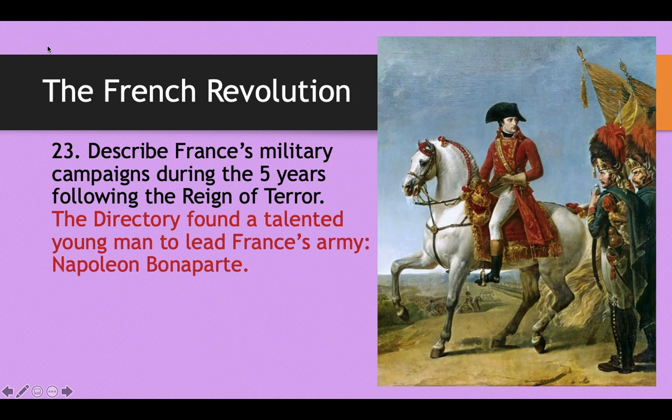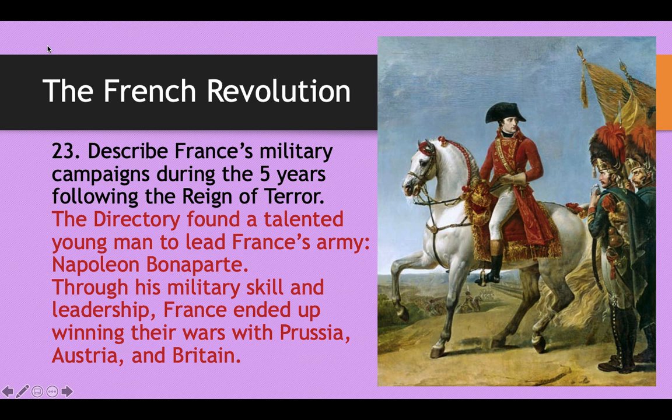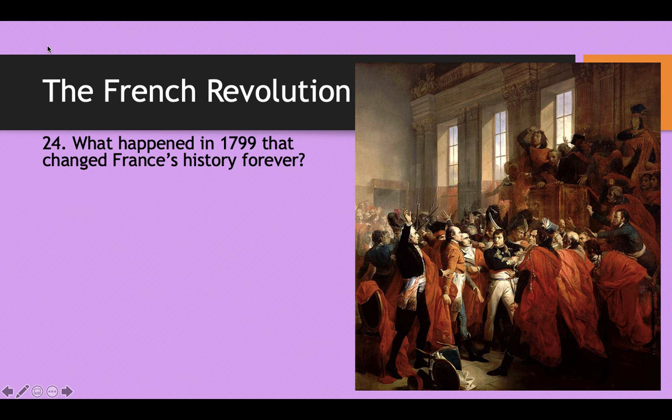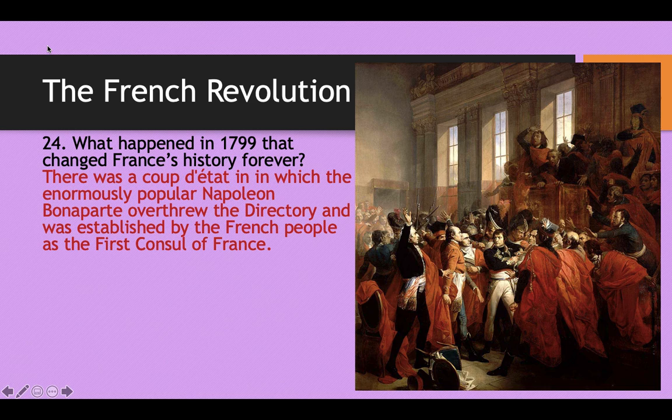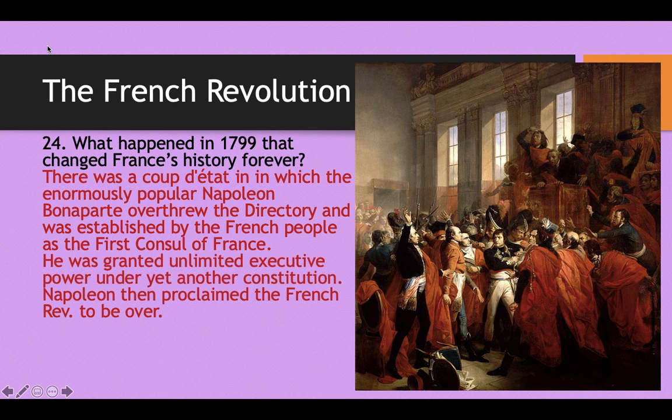The Directory found a very talented young man to lead France's army: Napoleon Bonaparte. Through his military skill and leadership, France ended up winning their wars with Prussia, Austria, and Britain, restoring order to France. Napoleon understandably became wildly popular with the French people. So much so that by 1799 there was a coup d'état — a takeover in which the enormously popular Napoleon Bonaparte overthrew the Directory, the people who had actually appointed him, and was established by the French people as the First Consul of France.